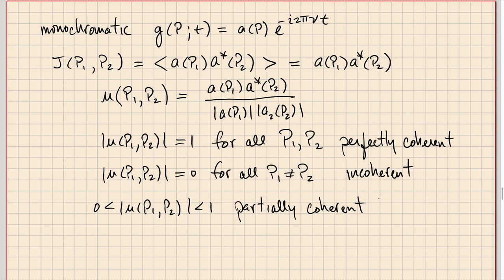So now we have a way to measure spatial coherence, and we can talk about spatially incoherent fields, spatially coherent fields, or spatially partially coherent fields. What we need to do in future lectures is figure out how an optical system modifies either the mutual intensity or the complex degree of coherence — what are the effects of an optical system on the spatial coherence properties of a field?